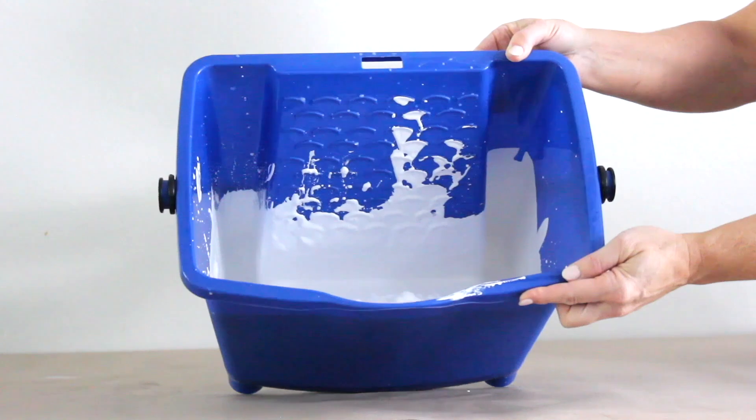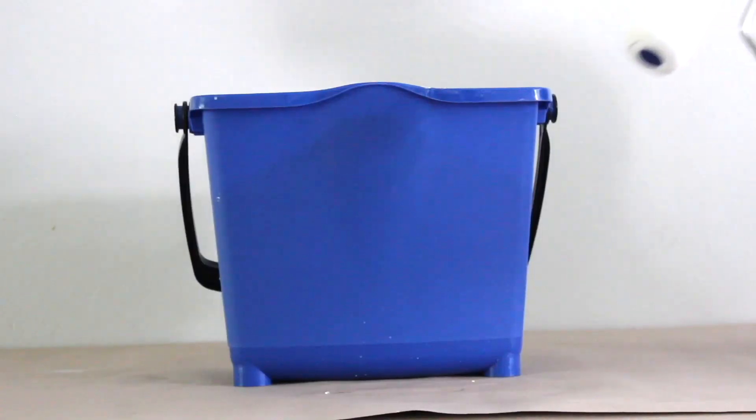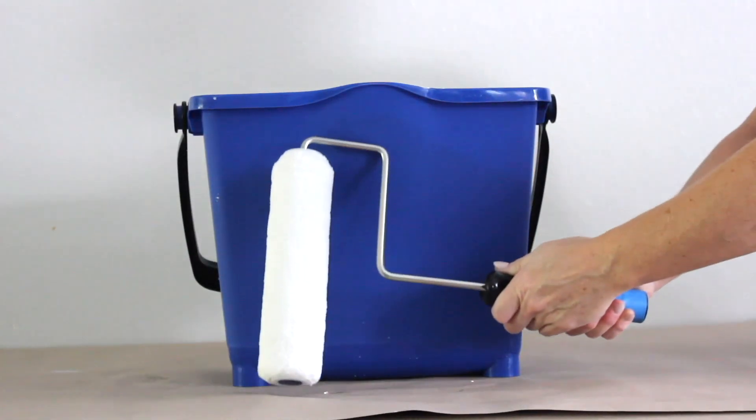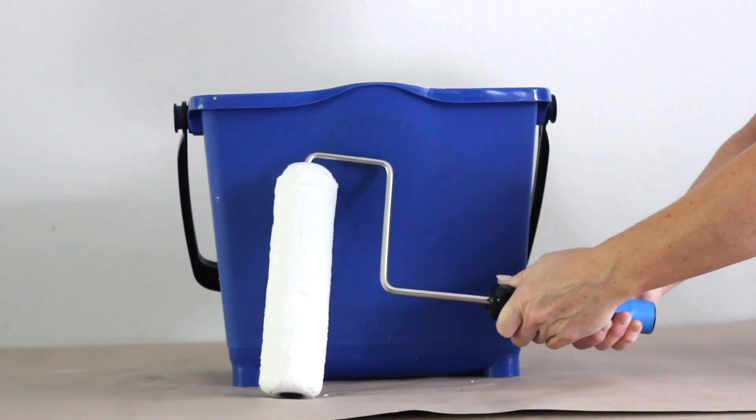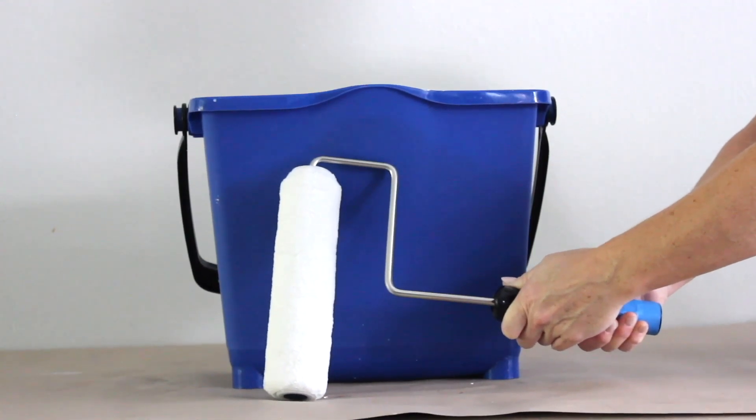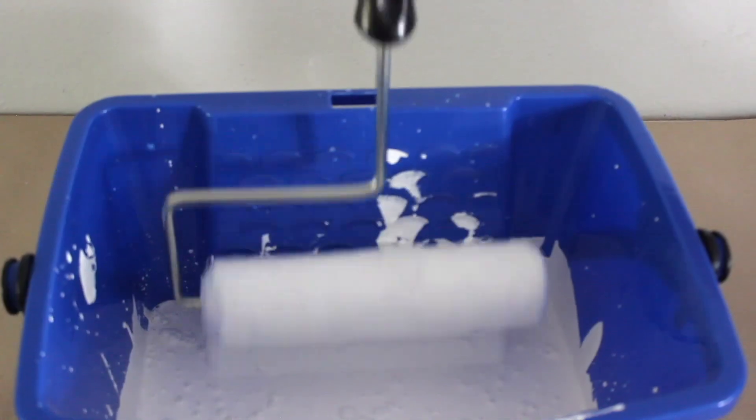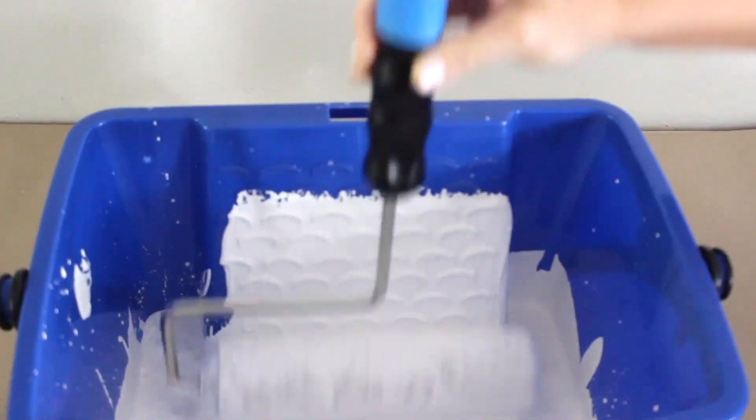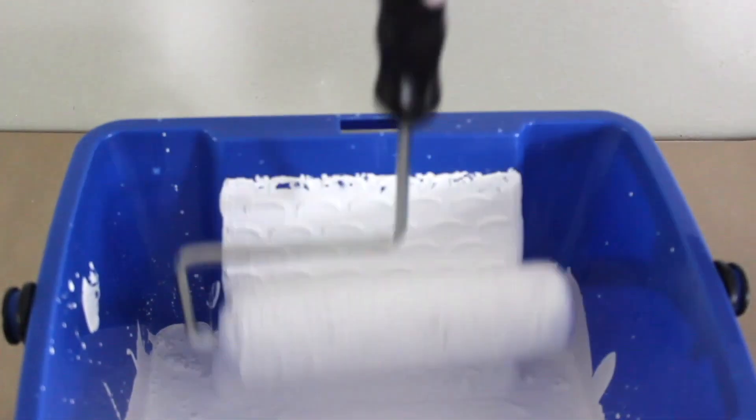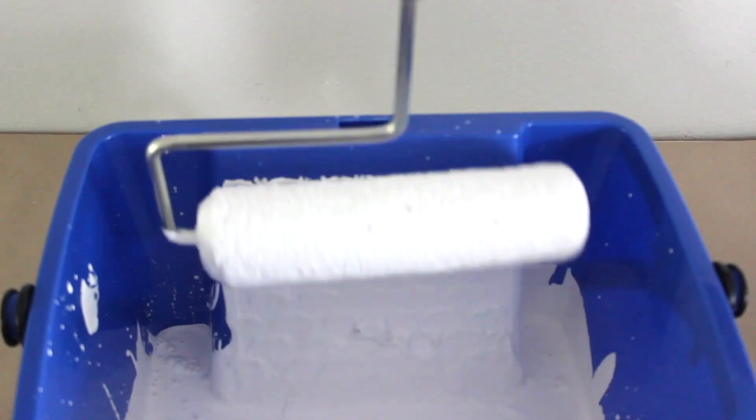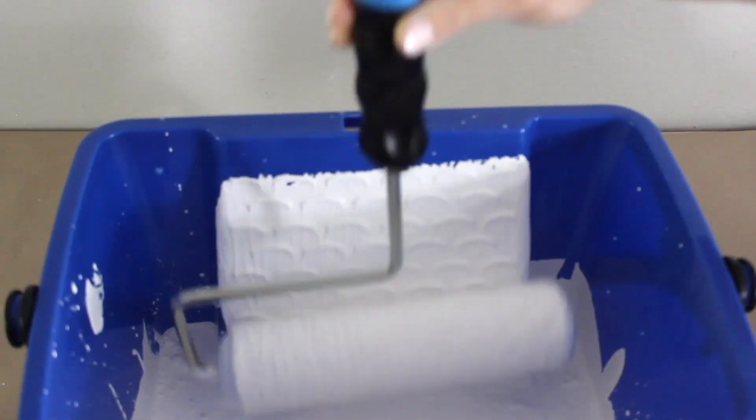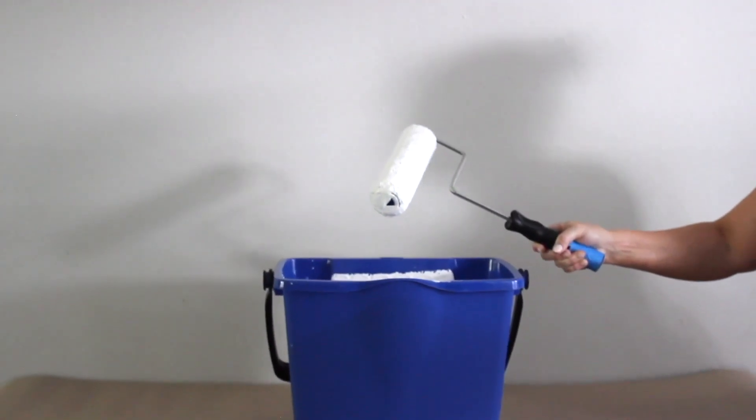I am going to apply the paint with a roller today, and this has a 3/8 inch nap. You can also use a paint brush. Make sure you wet your roller very well and use the grate on the side to spread it evenly onto your roller. Okay great, now we're ready to apply.